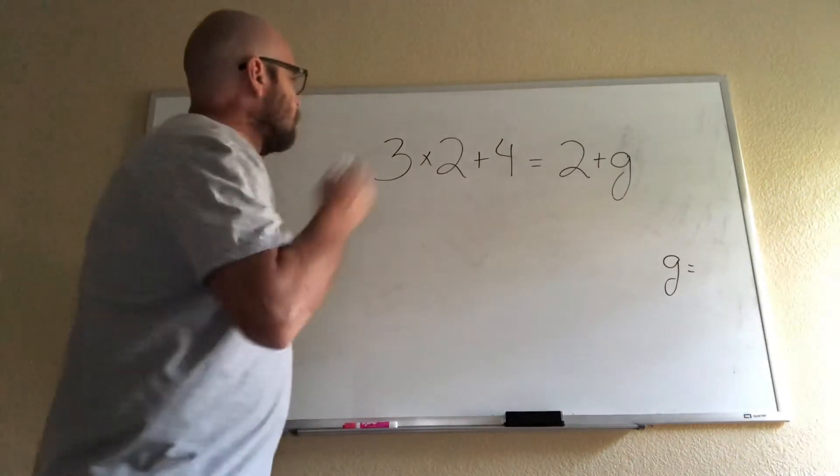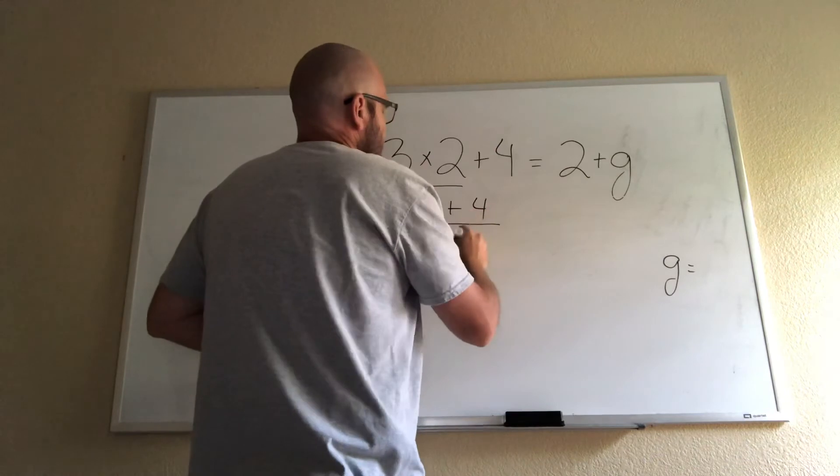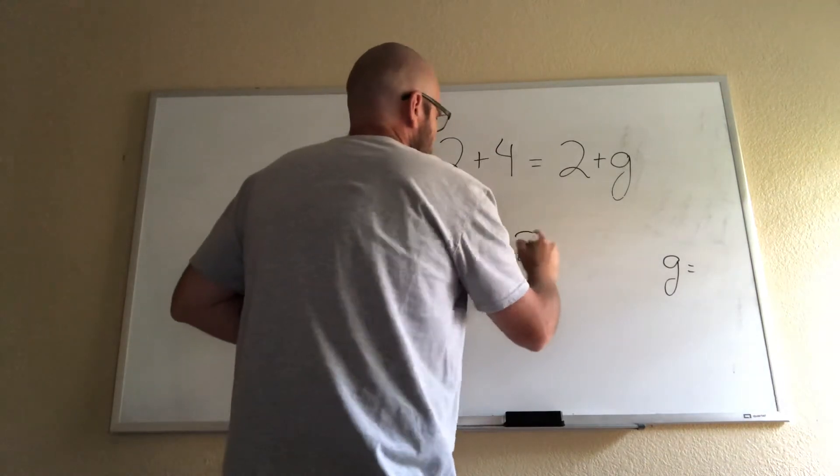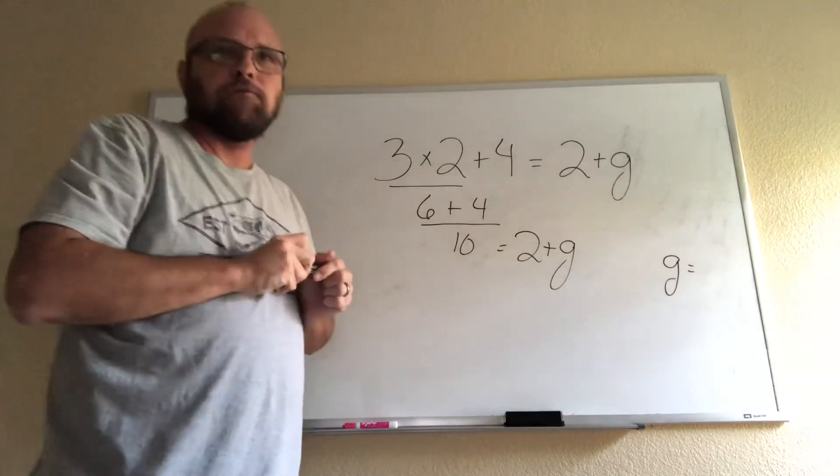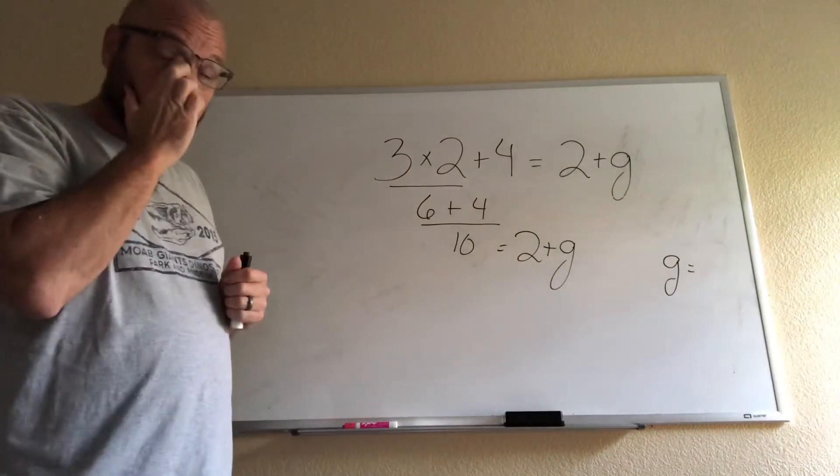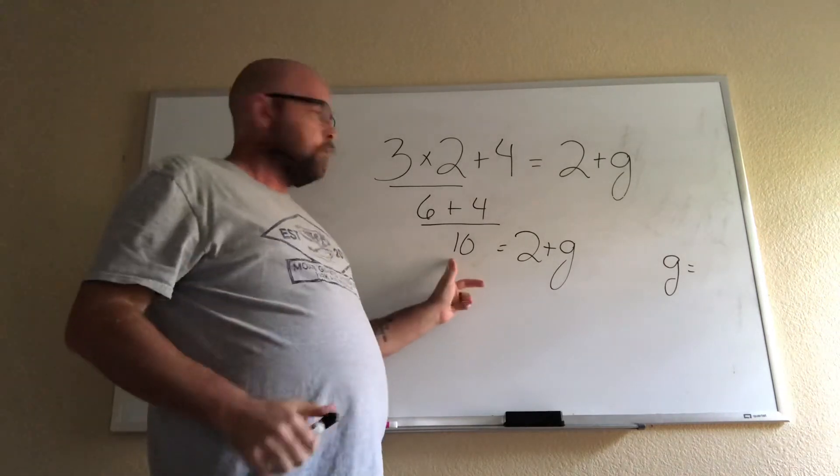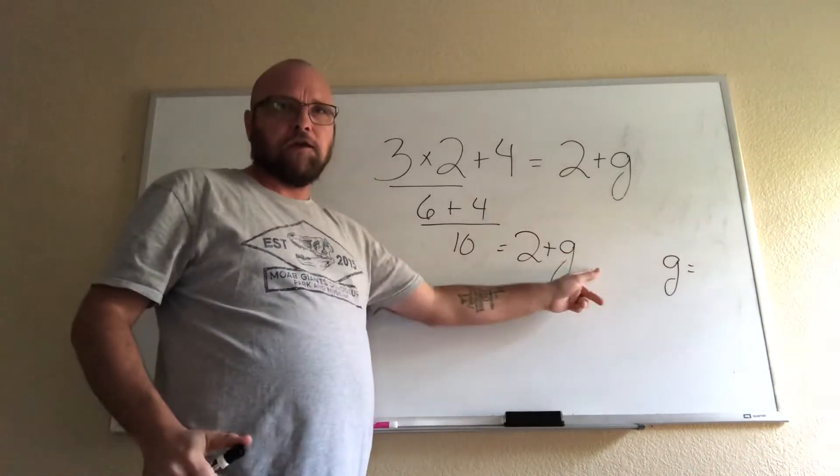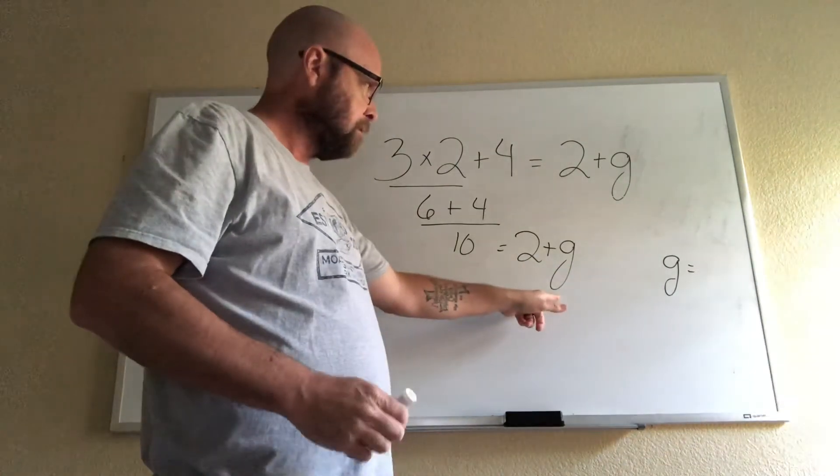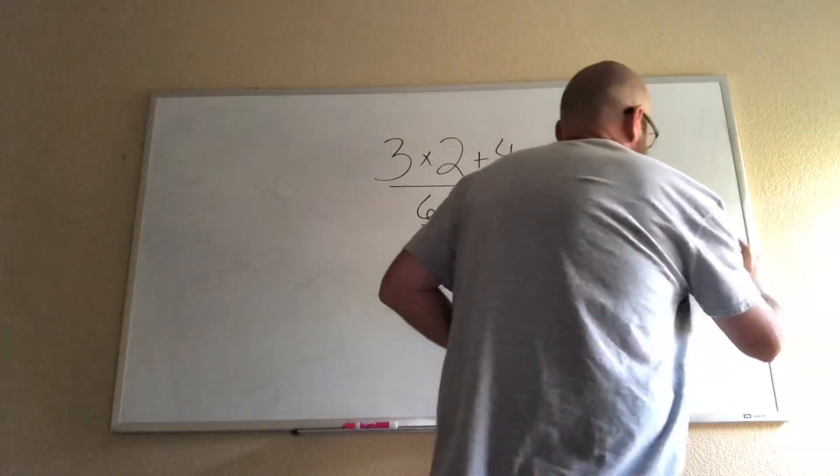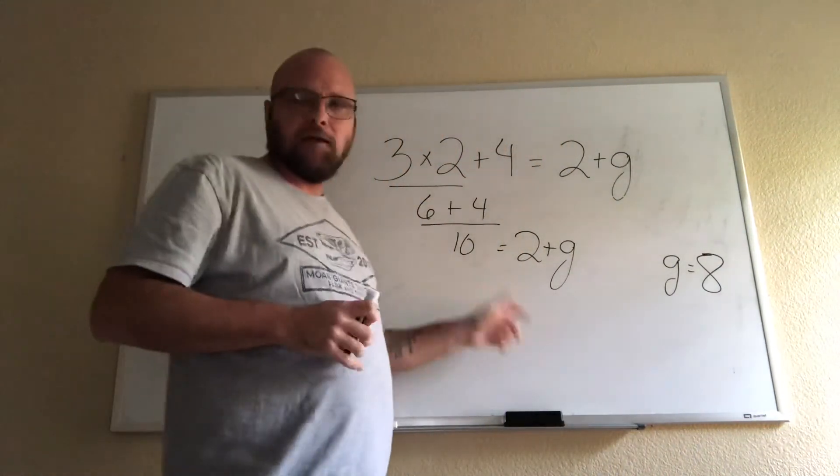So we start with the multiplication and that's 6. 6 + 4 then equals 10. What was the first one again? I don't remember. You'll have to go back and watch the video when I post it. That was a long time ago, I can't remember that. So we have 10 = 2 + G, so we have to figure out 2 plus what equals 10. Well, if I put an 8 there, then you'll see 2 + 8 will indeed equal 10.